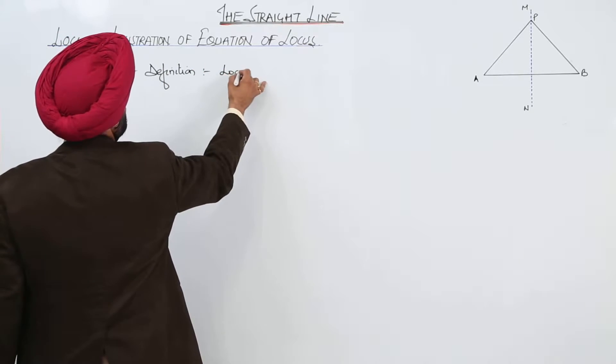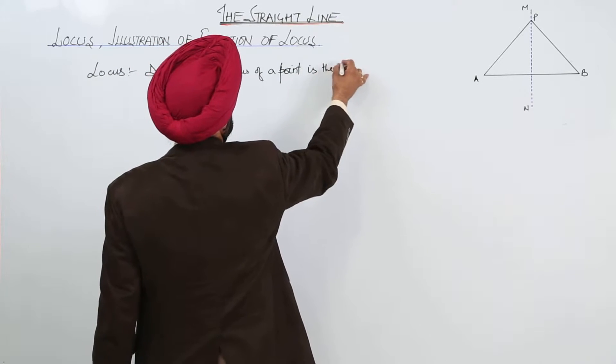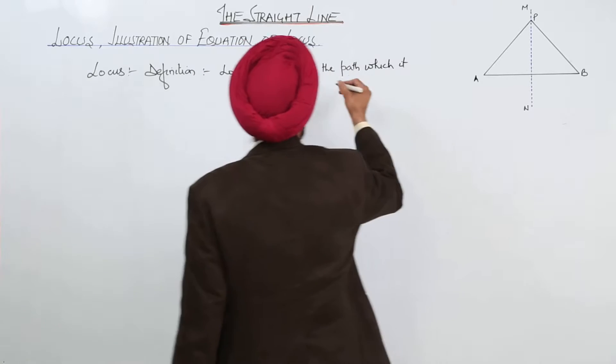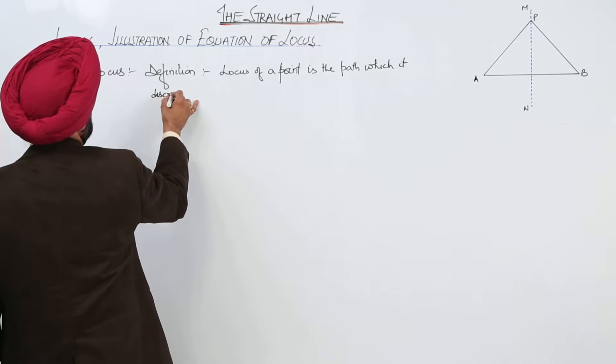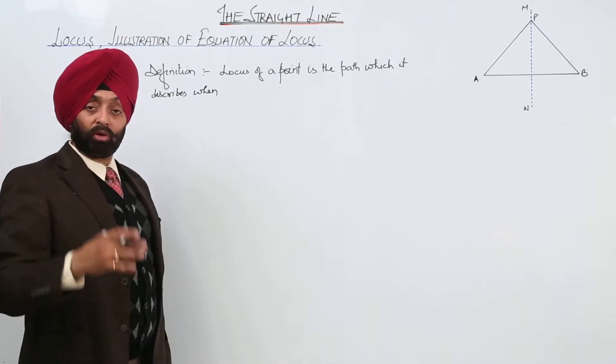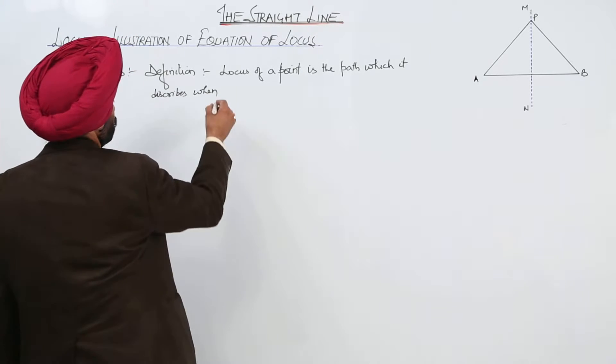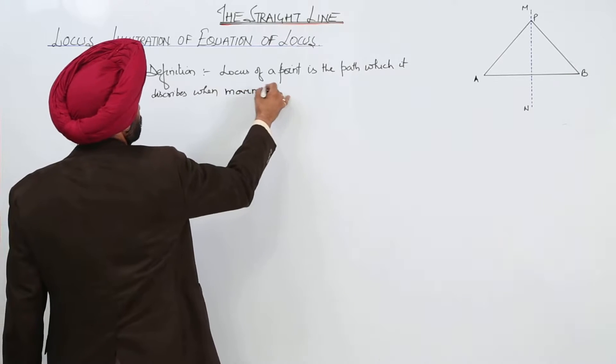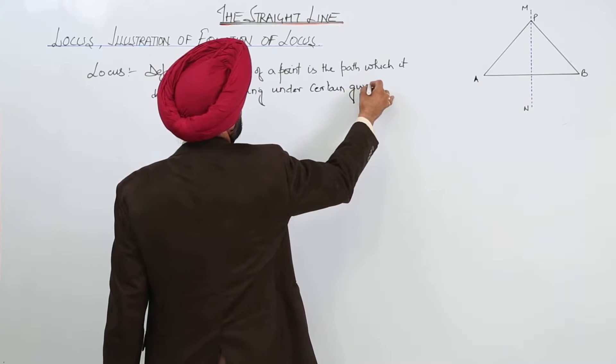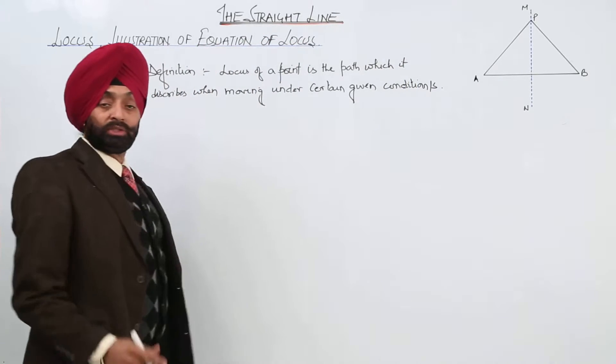Locus of a point is the path which it describes. Now, why I have written which it describes, because it depends on the different figures. So, locus of a point is the path which describes when moving under certain given condition or conditions. This is what you have already done it.